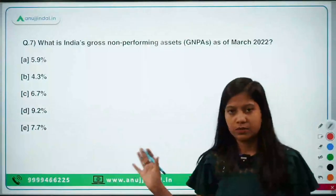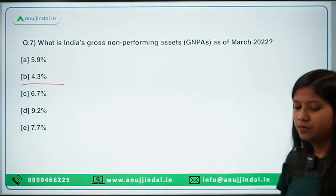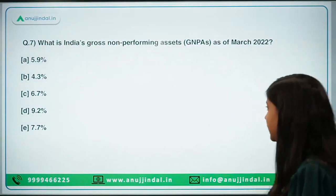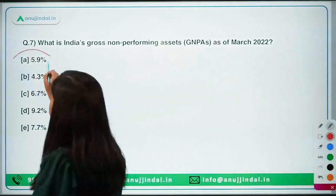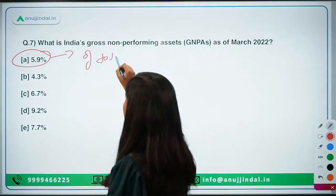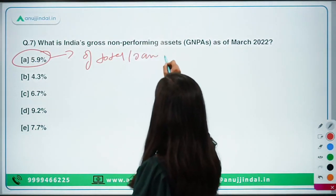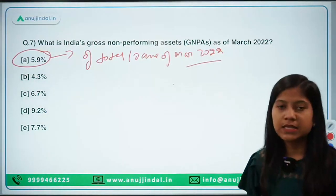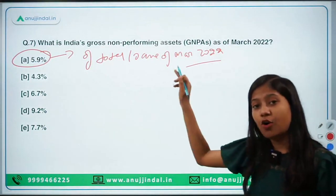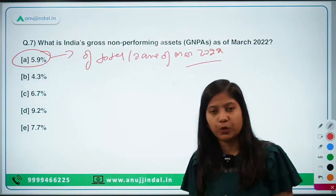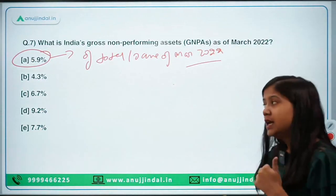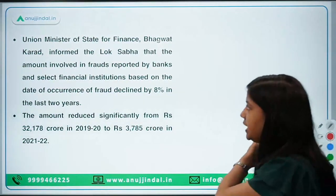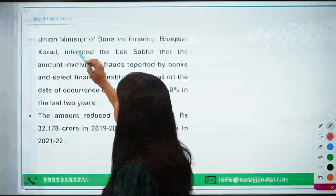What is India's gross non-performing assets as of March 2022? The right answer is 5.9% of total outstanding loans as of March 2022. This figure is given by the Minister of State for Finance in the Lok Sabha, and is also confirmed in the Financial Stability Report of RBI. So do remember: India's gross NPA was 5.9% as of March 2022.